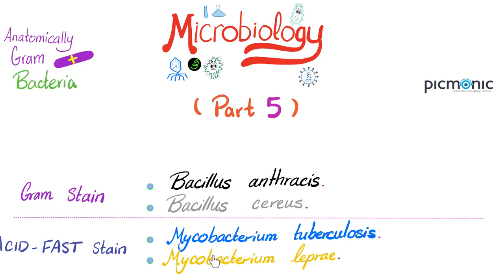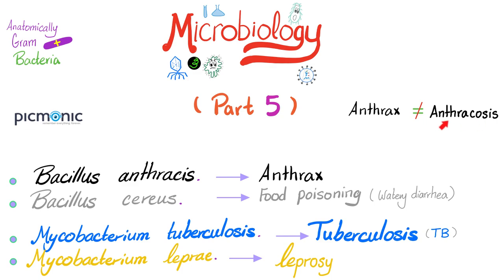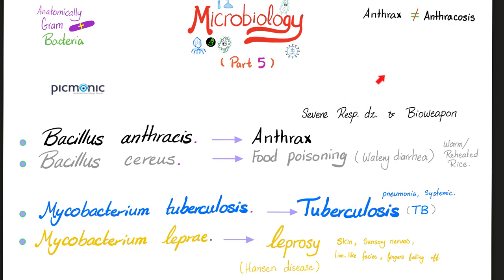Today's four organisms: the first two — Bacillus anthracis and Bacillus cereus — stain with gram. The second two — Mycobacterium tuberculosis and Mycobacterium leprae — do not stain with gram, so we use acid-fast stain. The two bacilli are spore-forming; the two mycobacteria are not. Anthrax causes severe respiratory, cutaneous, or GI disease and can be used as a bioweapon. Bacillus cereus causes food poisoning and watery diarrhea, especially from reheated rice. TB causes pulmonary and systemic disease. Mycobacterium leprae causes leprosy, or Hansen's disease, with skin problems, loss of sensory nerves, leonine facies, and digital loss.